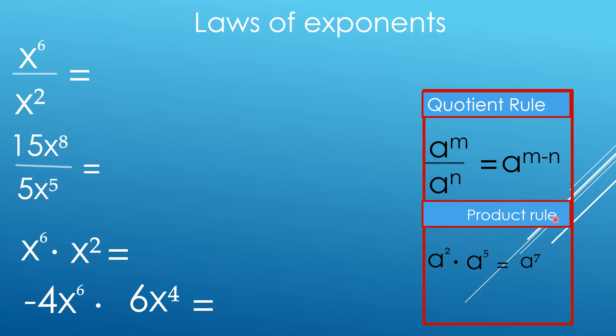For the product rule, we have A squared times A to the fifth power — copy the base and add the exponents — 2 plus 5 is equal to 7.